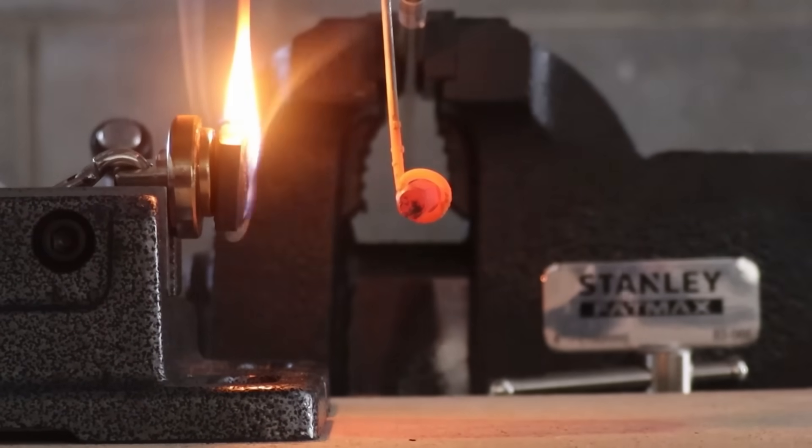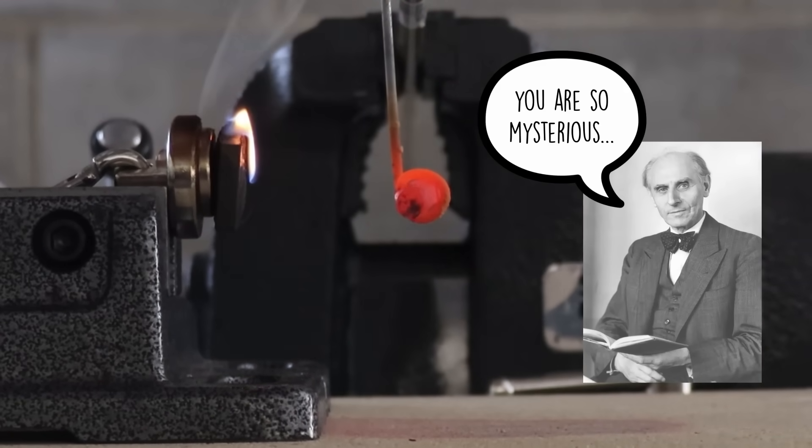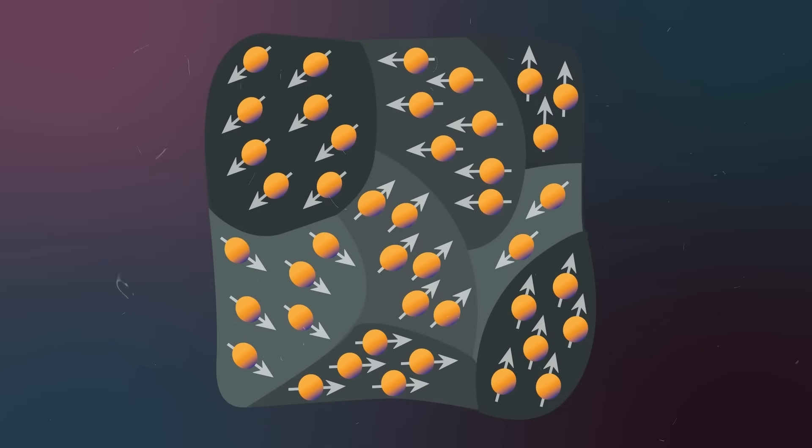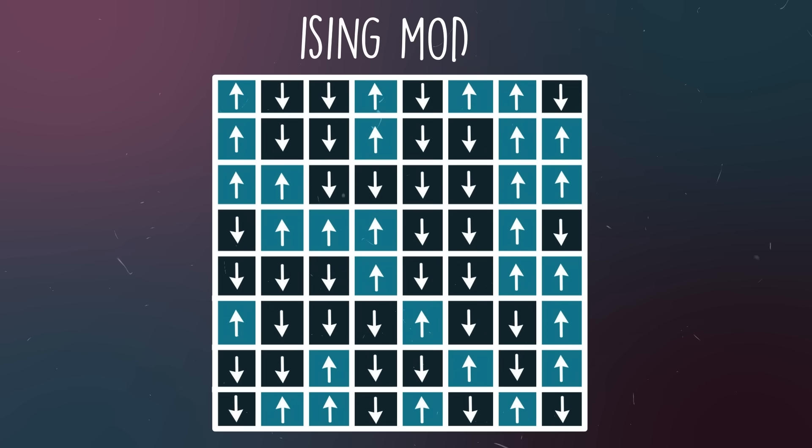In 1920, the physicist Wilhelm Lenz wondered about the mystery of magnetization as well. To avoid dealing with the messiness and complexity of all the atoms in a magnet, he developed a simplified model, now called the Ising Model. He hoped that by studying the simplified model, he could understand the behavior of a real magnet.